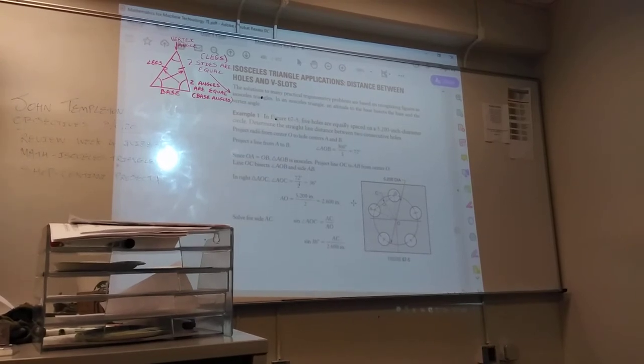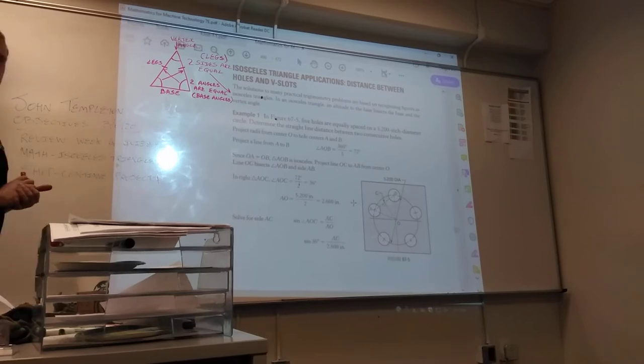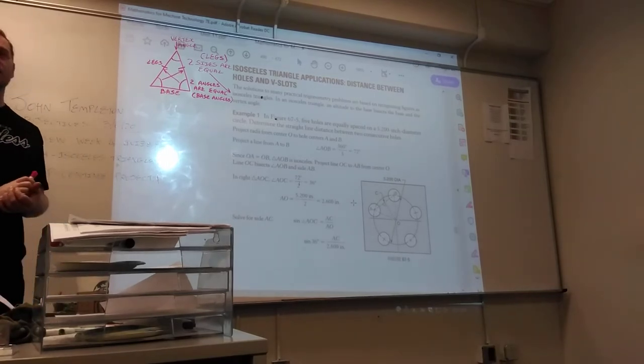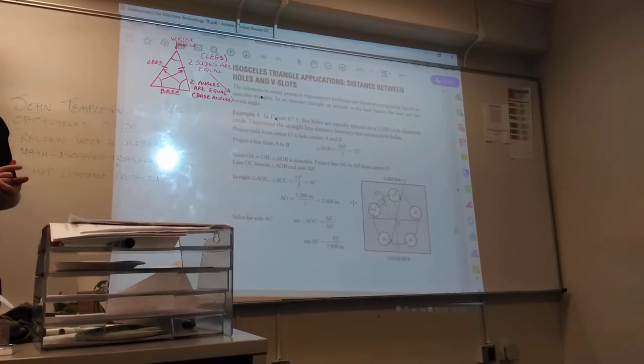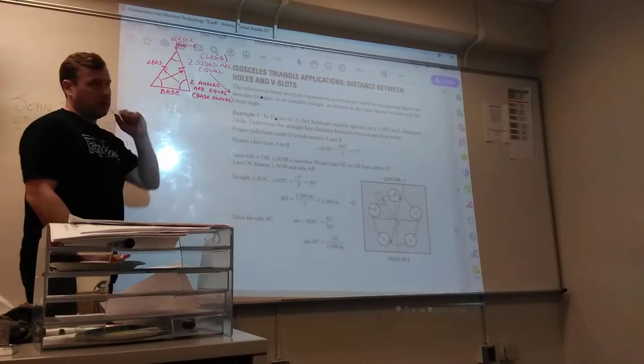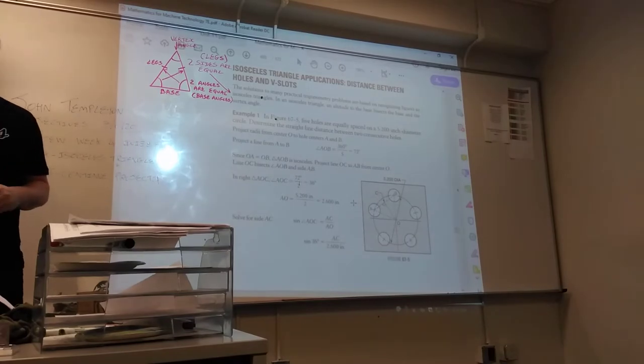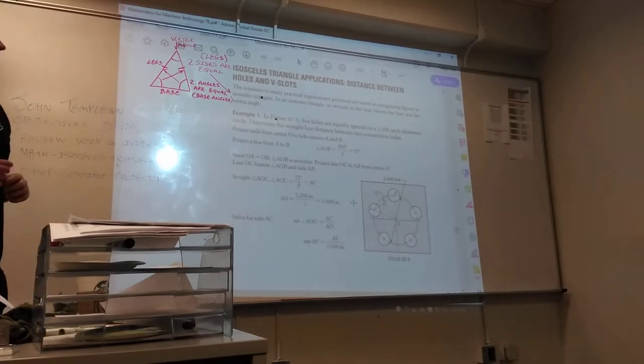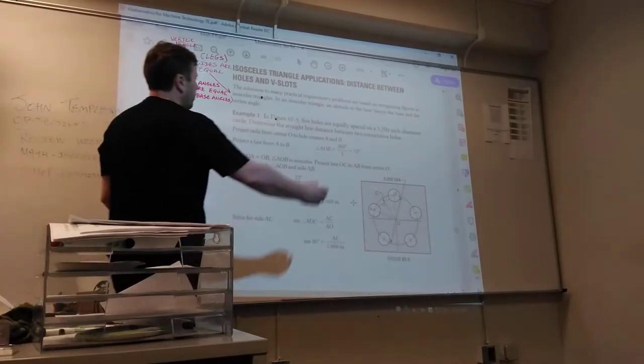One last time: the isosceles triangle has two equal sides, two equal angles. Those sides are called legs. Two equal angles are called base angles, and the third angle is called the vertex angle. You have to understand those terms for the geometric principle.